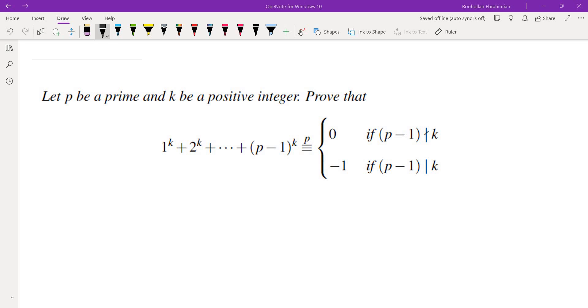Hello, in this video we're going to evaluate the sum of 1^k + 2^k + ... + (p-1)^k mod p. The answer is 0 or -1, depending on whether (p-1) divides k or (p-1) does not divide k.